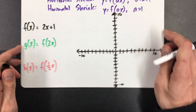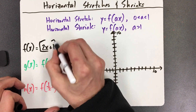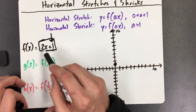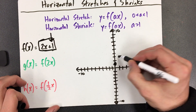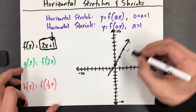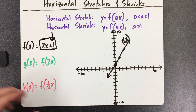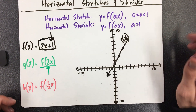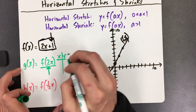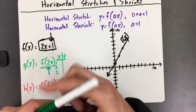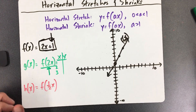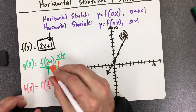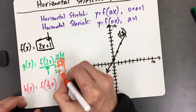Let me show you how this works. If I graphed the original f(x), the y-intercept is 1, so I put a dot on 1. The slope is 2, so that's up 2 over 1. Now for g(x), I immediately recognize it's horizontal because the number is inside the parentheses. When I do my x and y table, since the number is inside the parentheses I'm going to multiply the inputs by 2 right now — not at the end. So 1 becomes 2, 2 becomes 4, 3 becomes 6.